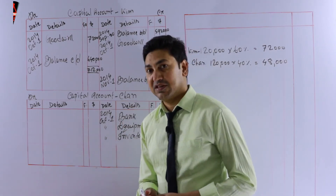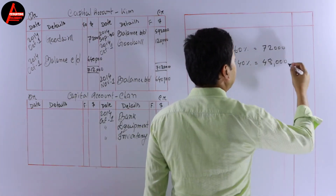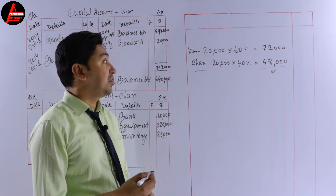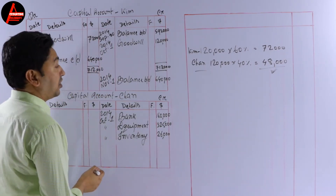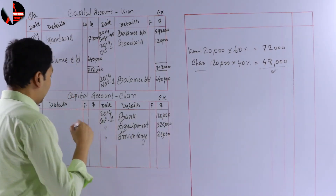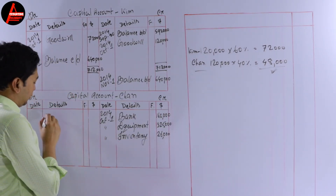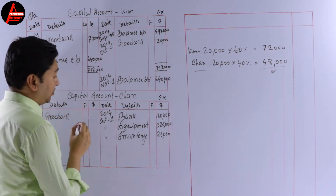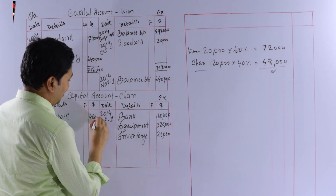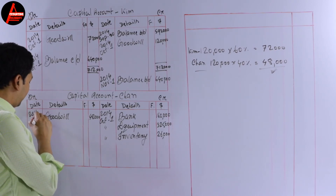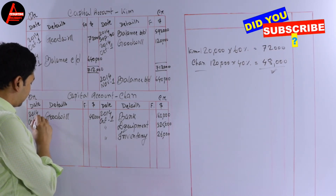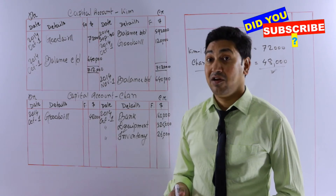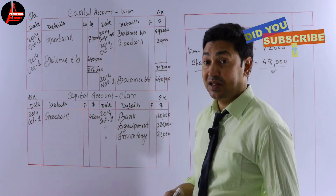We calculated goodwill for Chen at 48,000 dollars. This value of goodwill will decrease Chen's capital, so on the debit side write: Goodwill — 48,000 dollars, dated 1 October 2014. There are no more items to enter in this capital account.